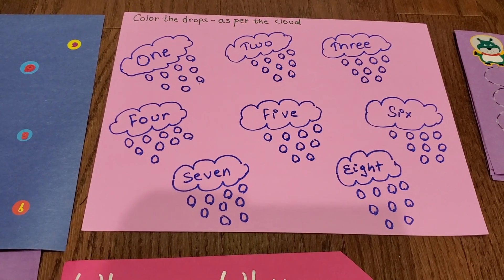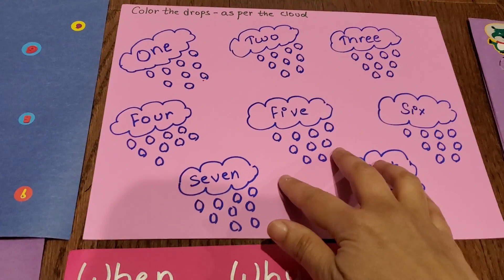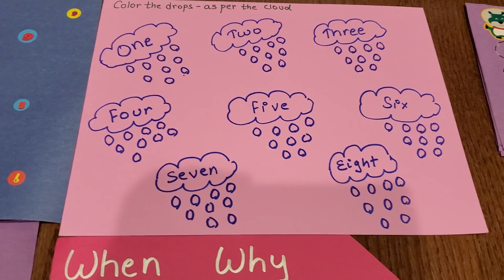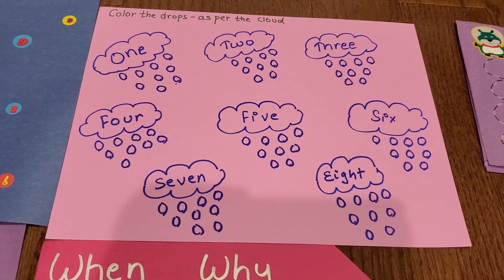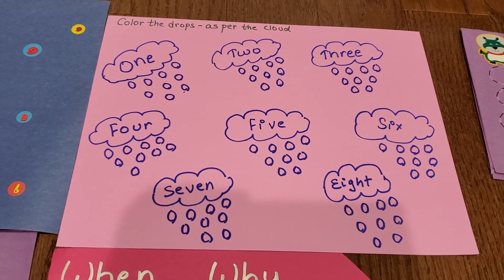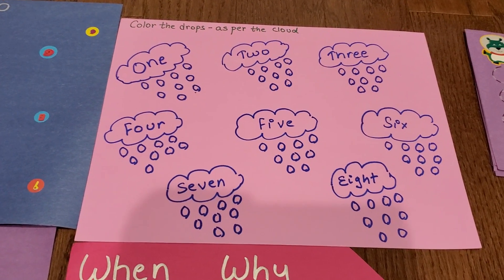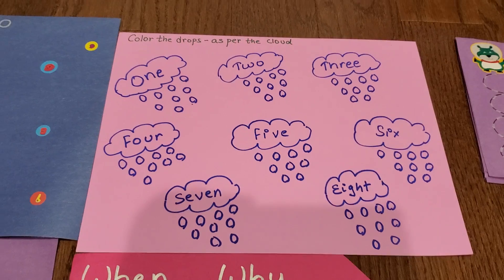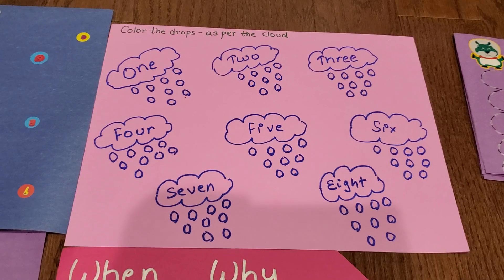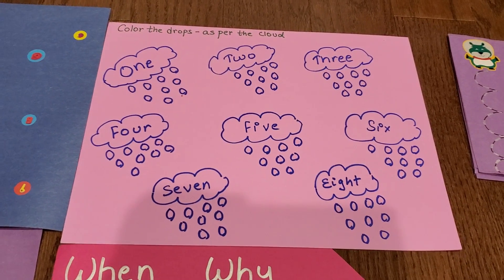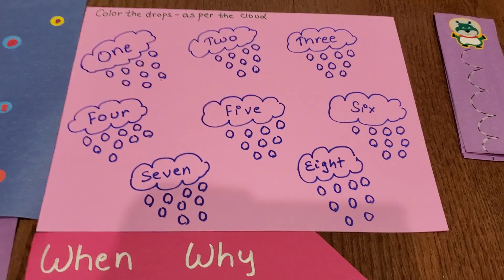I'm going to show you what I've done behind - 'Color the drops as per the cloud.' I've made eight different clouds and written it in words. If your child doesn't know how to read yet, you can just use numbers. The drops are already made. The child needs to just color. If it says 'one,' he needs to color one drop. If it says 'two,' he colors two drops. You can do double digits, and you can adapt all these activities according to your child's age.